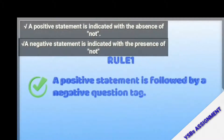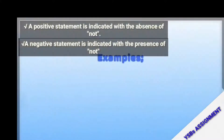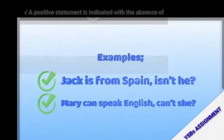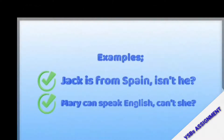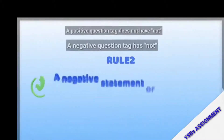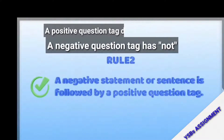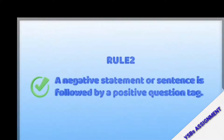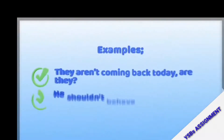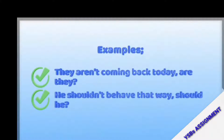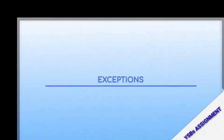Rule number one: a positive statement is followed by a negative question tag. A positive statement is one that does not have 'not' in it. Example: 'Jack is from Spain' — no 'not' present — 'isn't he?' That's a negative question tag. 'Mary can speak English fluently' — 'can't she?' Rule number two is the reverse: a negative statement or sentence is followed by a positive question tag. Example: 'They aren't coming back today' — 'are they?'